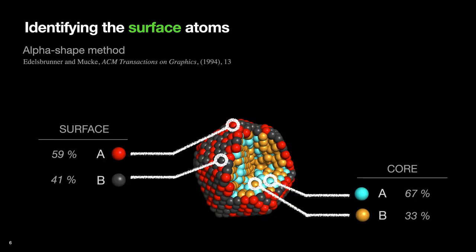So to make a quantitative analysis, and because we were interested in the surface segregation level, we used the alpha shape method to identify the surface atoms. Using this method, we were able to count the number of each type of atom on the surface.